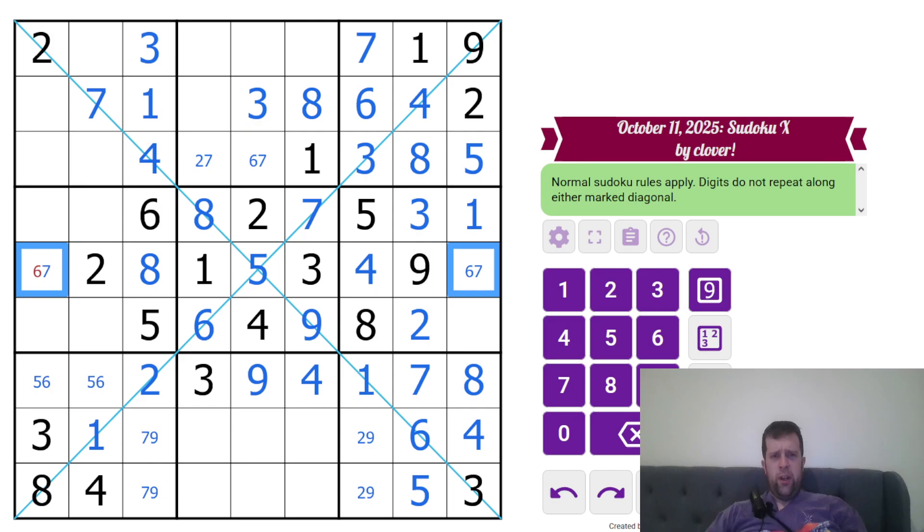Still can't quite unwind that just yet, but I'll leave it a little... Oh, no, I can, never mind. That's a 7, 6, 7. 4 and 9 along here. The 4 goes there. 3 and 1. Those two sorting that out. Can I do the 5, 9? Not quite. That's a 1.